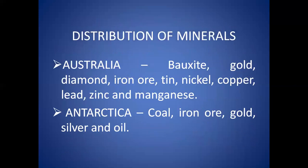Australia is the largest producer of bauxite in the world. It is a leading producer of gold, diamond, iron ore, tin and nickel. It is also rich in copper, lead, zinc and manganese. The Kalgoorlie and Coolgardie areas of Western Australia have the largest deposits of gold.